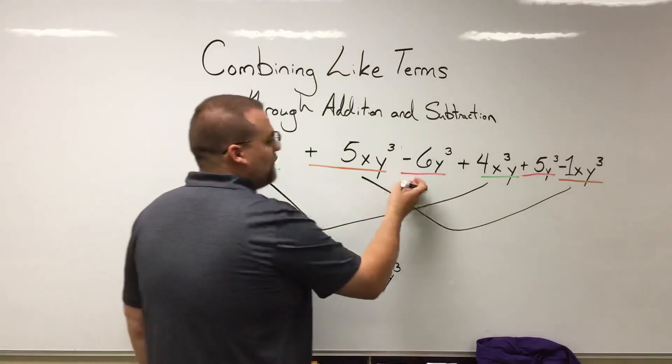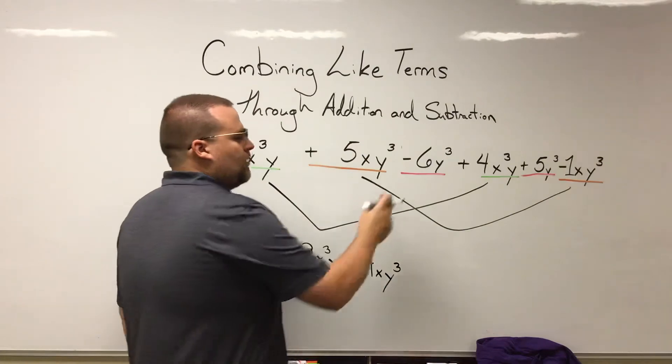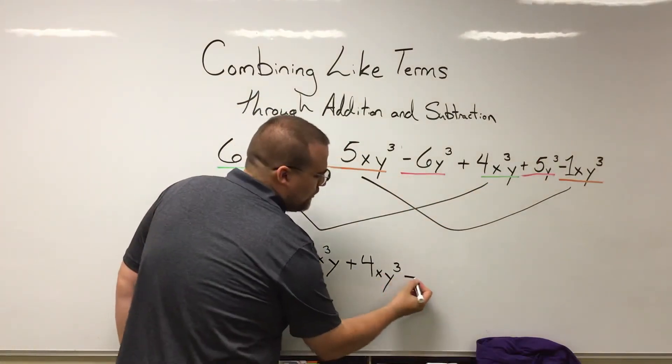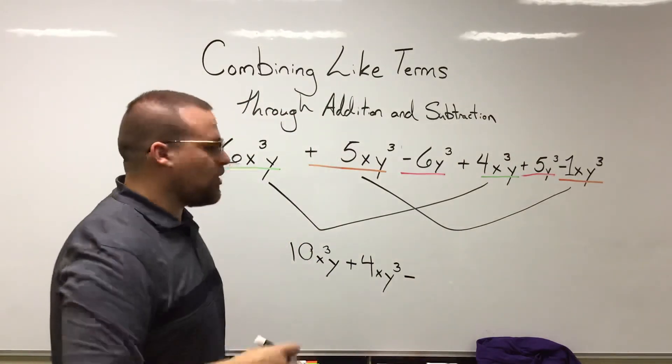Finally, we have -6Y³ + 5Y³. -6 + 5 is going to end up being -1. Do we need to write that coefficient of 1? No, we don't.